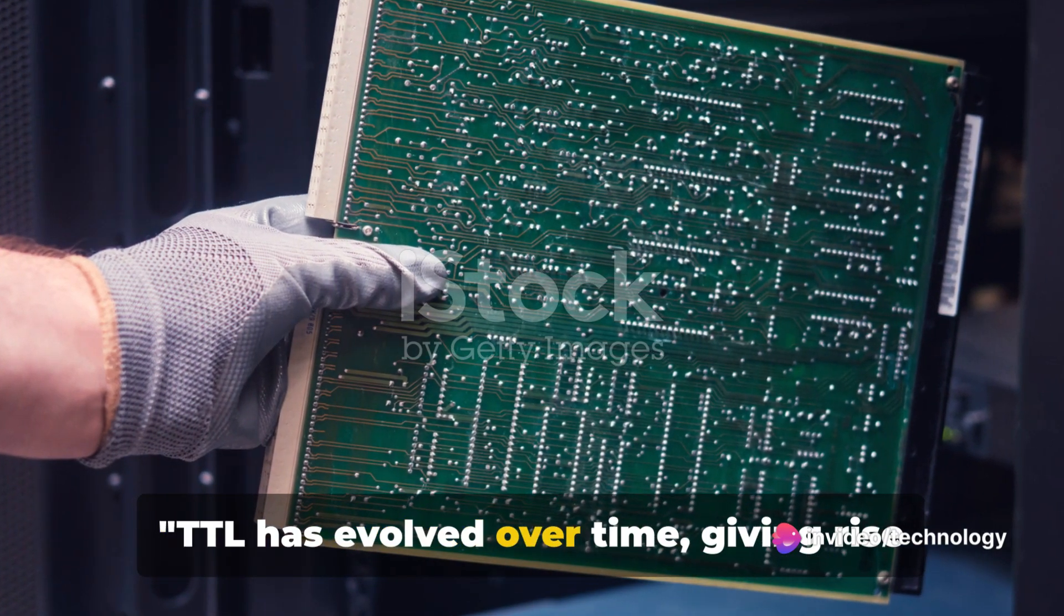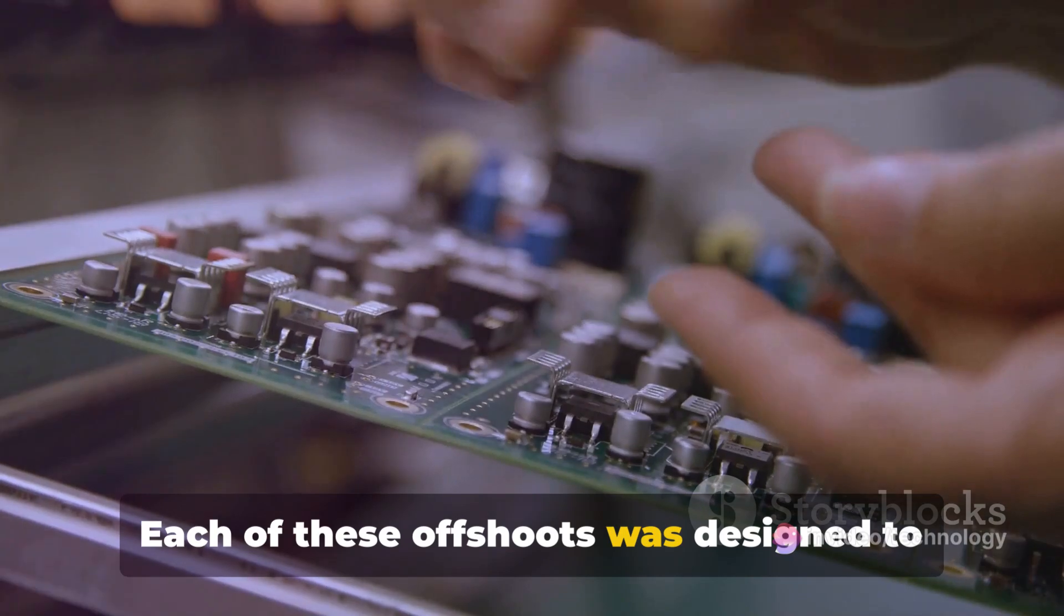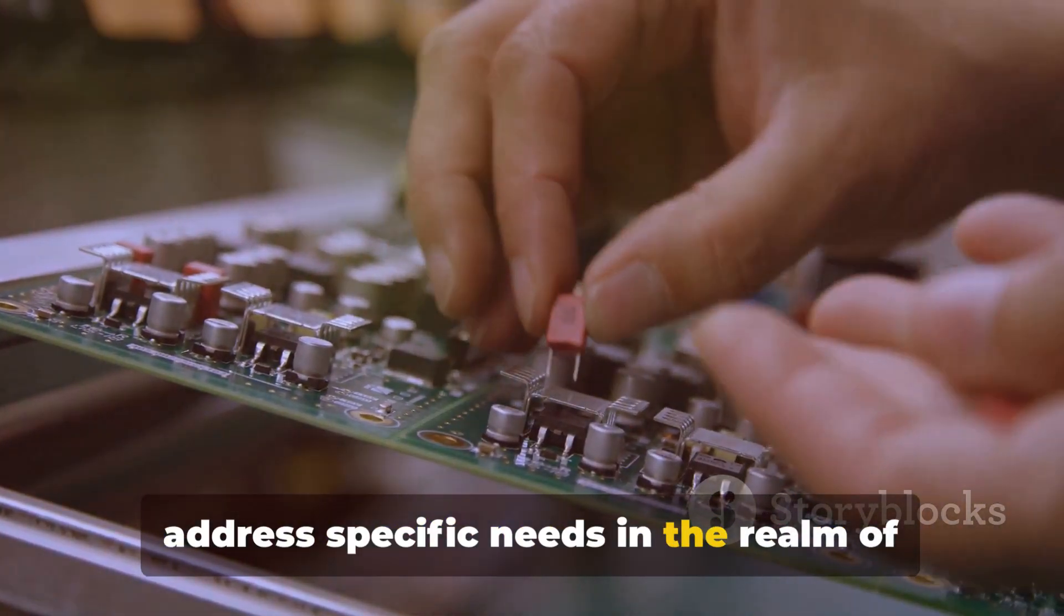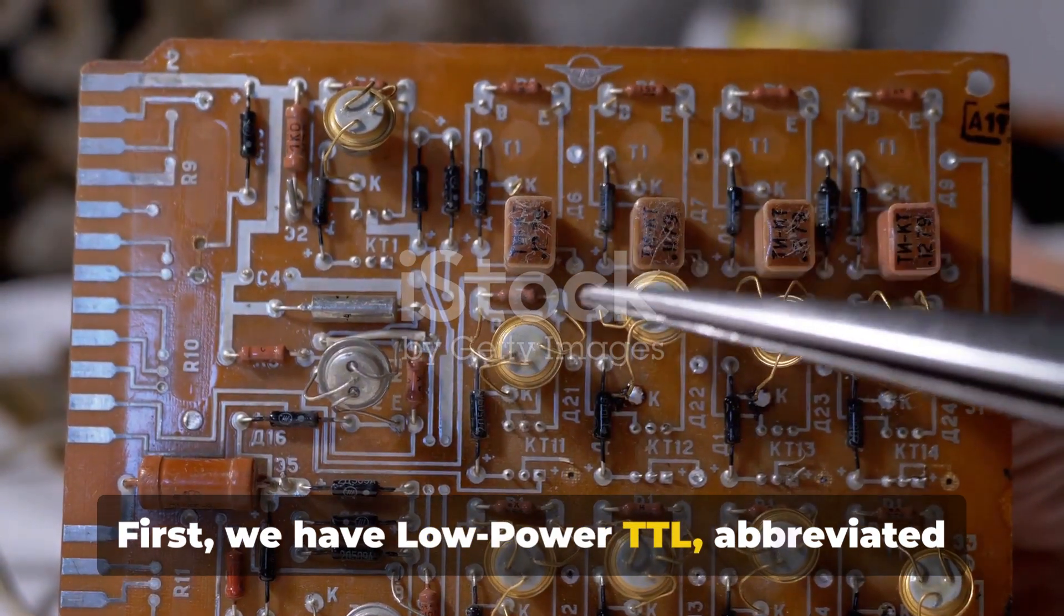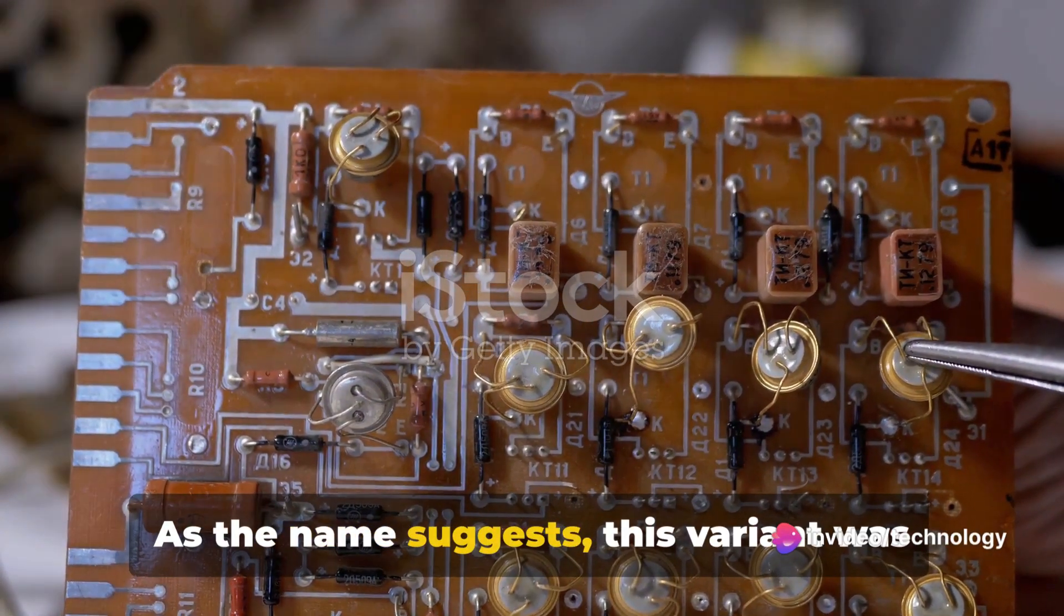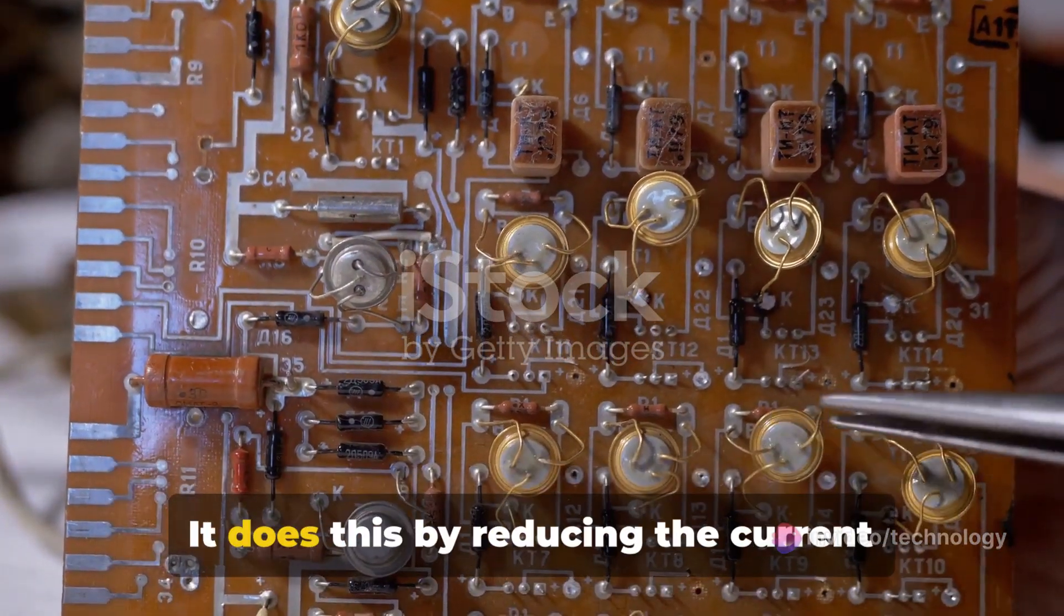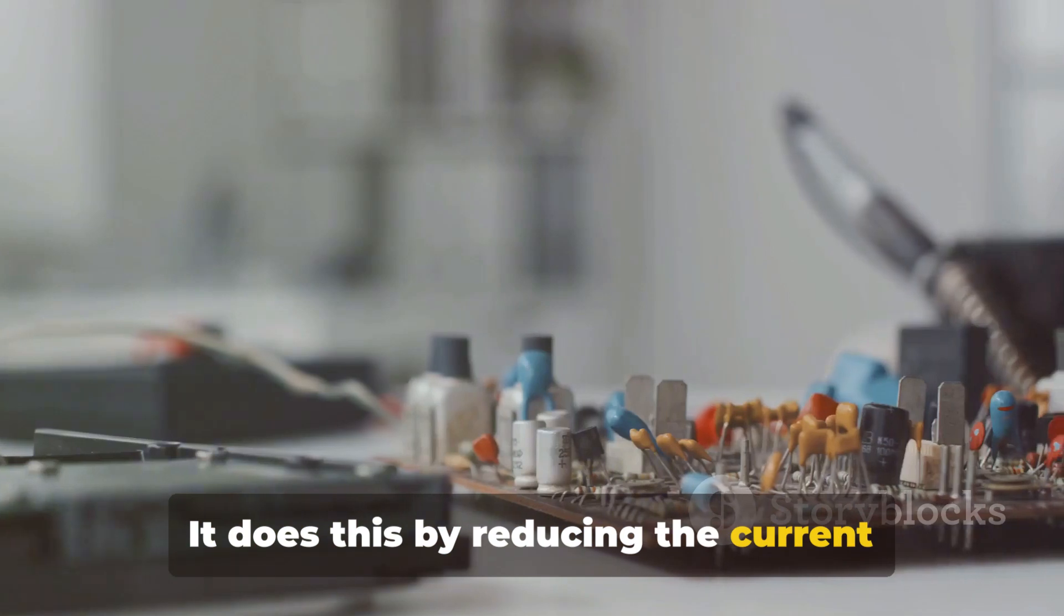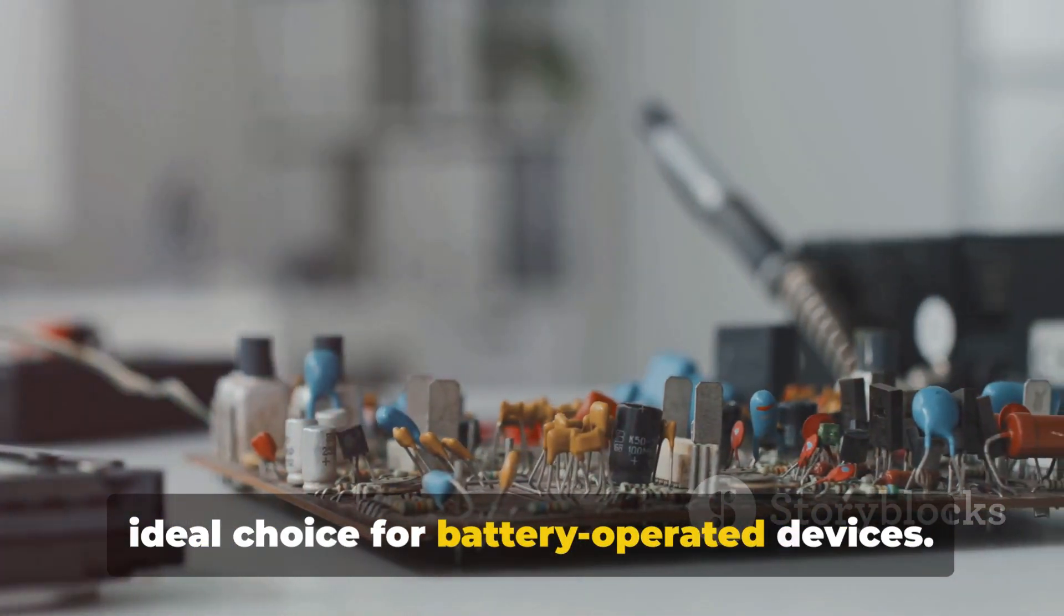TTL has evolved over time, giving rise to several variants. Each of these offshoots was designed to address specific needs in the realm of digital electronics. First, we have low power TTL, abbreviated as LPTTL. As the name suggests, this variant was developed with the aim of reducing power consumption. It does this by reducing the current drawn from the power supply, making it an ideal choice for battery-operated devices.